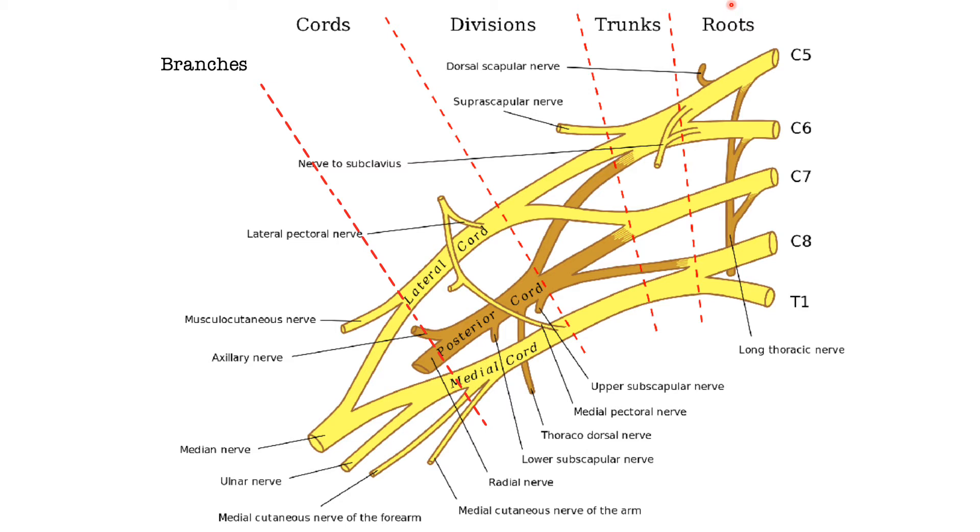So if you have a look here at the roots, we're gonna have the anterior rami of C5, C6, C7, C8 and T1. They're going to form the roots of the brachial plexus.